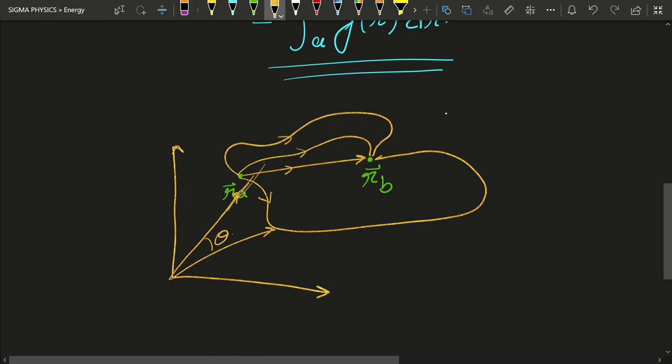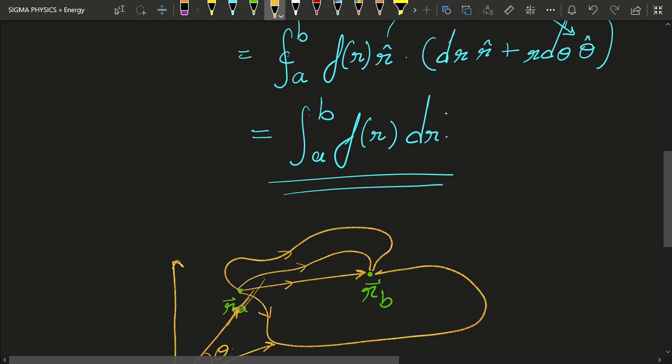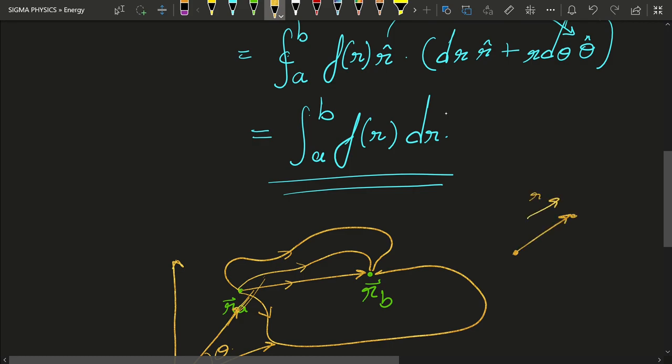That is, the work done by a central force depends only upon the initial and final positions of that particle. That is because the work done by a central force is independent of theta. That means it will only depend upon the radial displacement. If this is the r cap direction, it will only depend upon the radial displacement of the particle, which instead depends only upon the initial and final position of that particle.